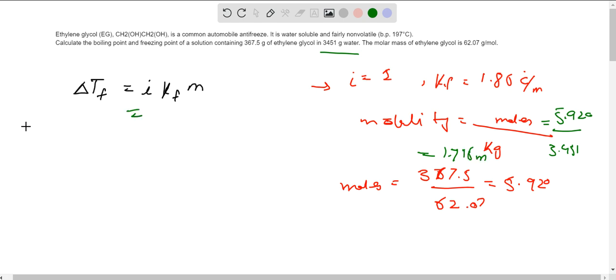Delta Tf is equal to freezing point of pure water minus freezing point of solution. Now we substitute the values. The freezing point of pure water is always 0 degrees Celsius.